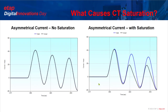For cases where the asymmetrical component of the fault current is responsible for CT saturation, the effect is typically observed later than with symmetrical or remnant saturation. Its effect starts to show up in the raw data waveform during the second cycle of the fault and remains for subsequent cycles.